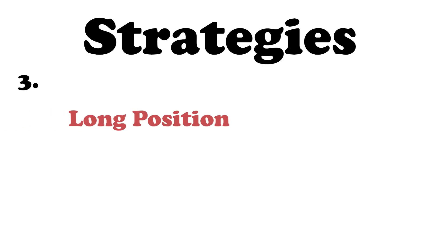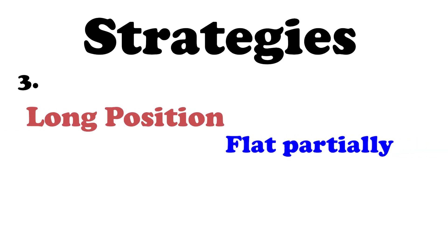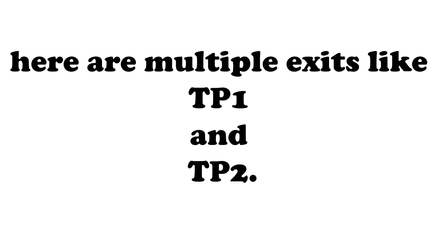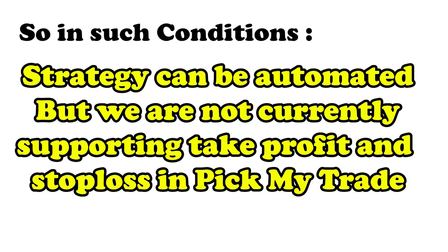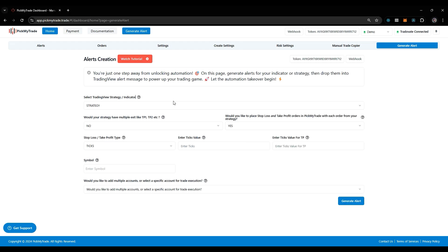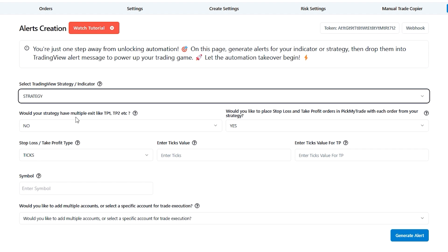The third strategy type is where you go long and then flat partially, meaning there are multiple exits like TP1 and TP2. In this condition, the strategy can be automated, but we are not currently supporting take profit and stop loss in PickMyTrade for this type.